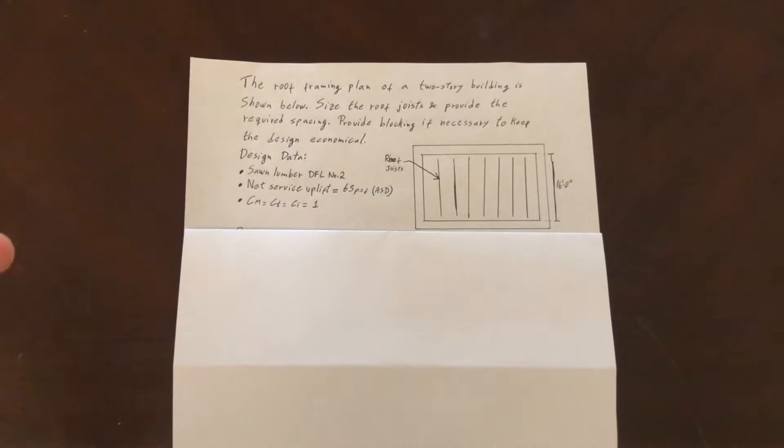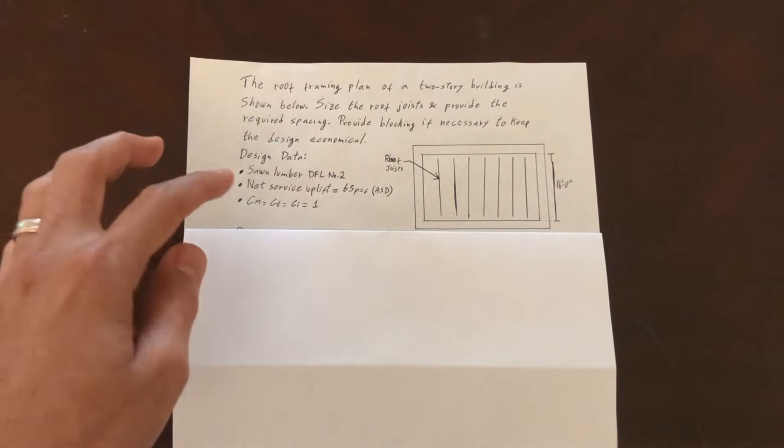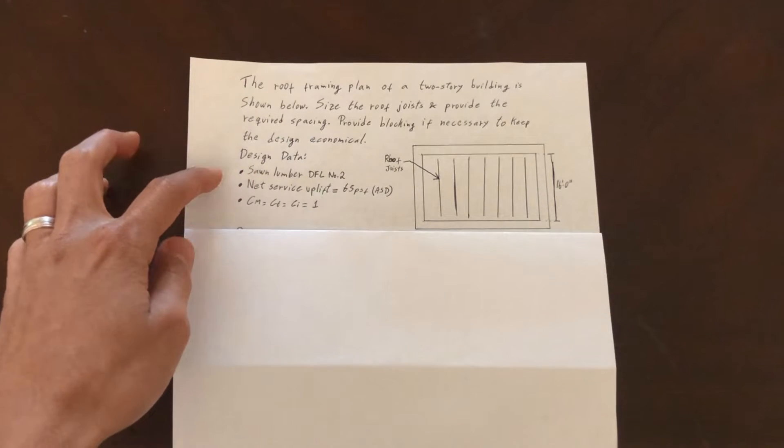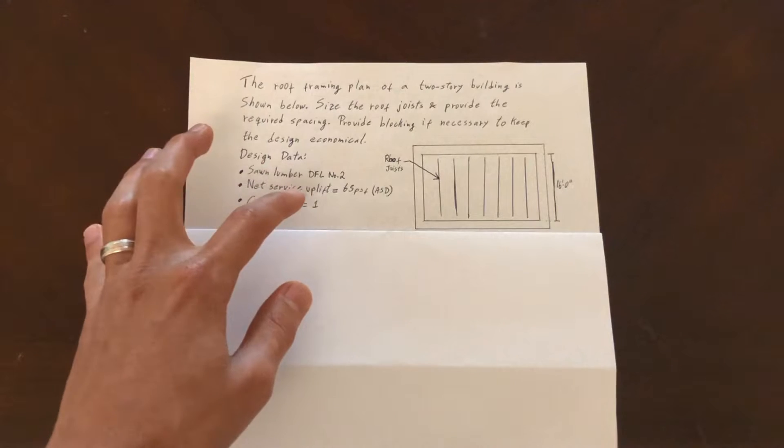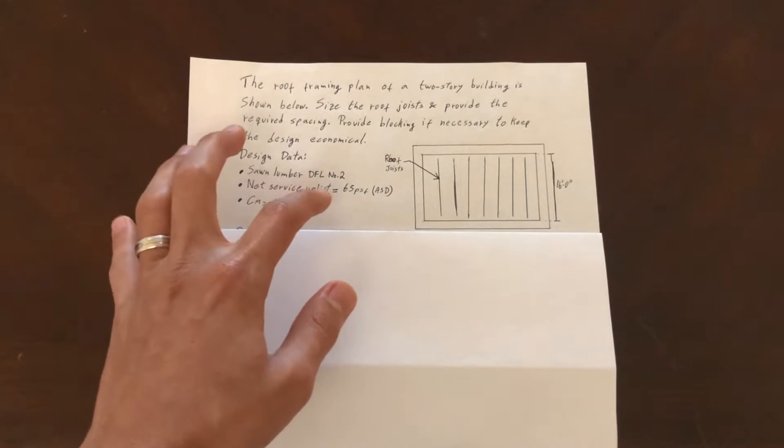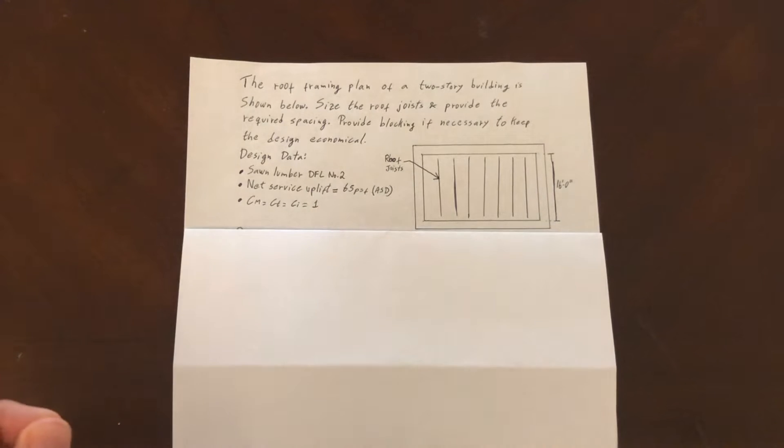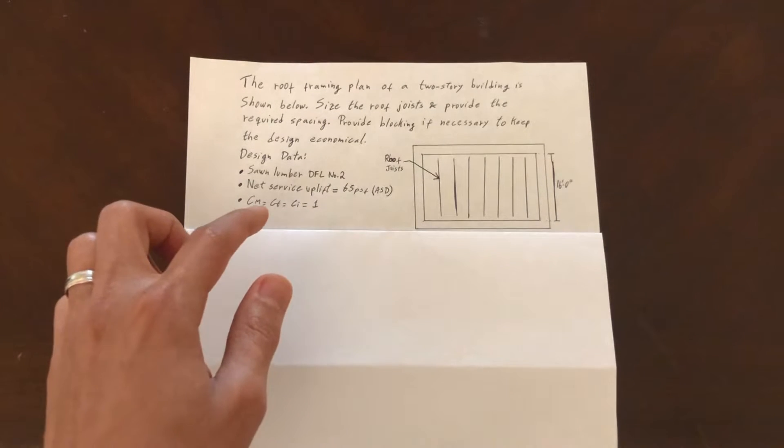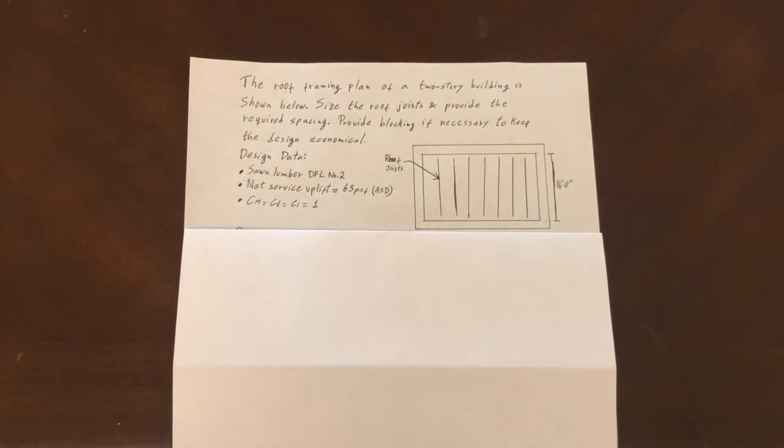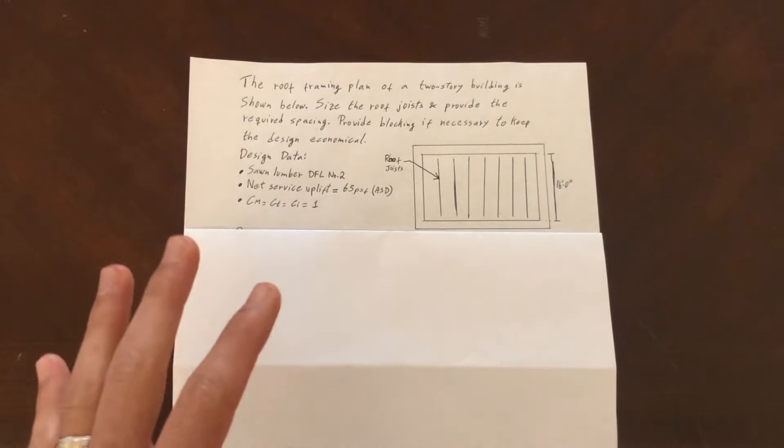The design data includes lumber Douglas fir, larch number two as the material for the joist. The net service uplift load, which we understand is a wind load, is 65 PSF ASD. These three adjustment factors are equal to one.